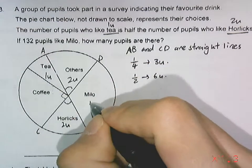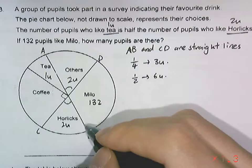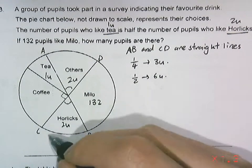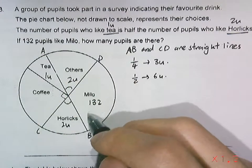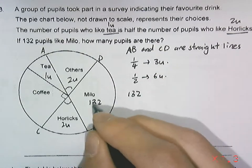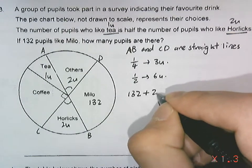It's given 132 pupils like Milo. So those who like Milo plus those who like Horlicks would also be half of the entire pie chart. We can write down 132 pupils plus Horlicks two units.